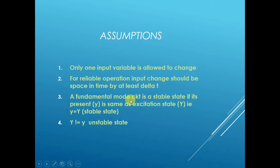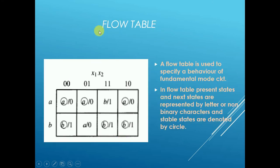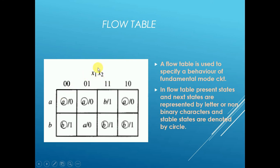We require the concept of stable and unstable states for the flow table. A flow table is used to specify the behavior of a fundamental mode circuit. Whenever you want to find which states are stable and which are not, you draw a flow table — similar to how you use a K-map for synchronous sequential circuits. The flow table is drawn between the inputs and the present state.